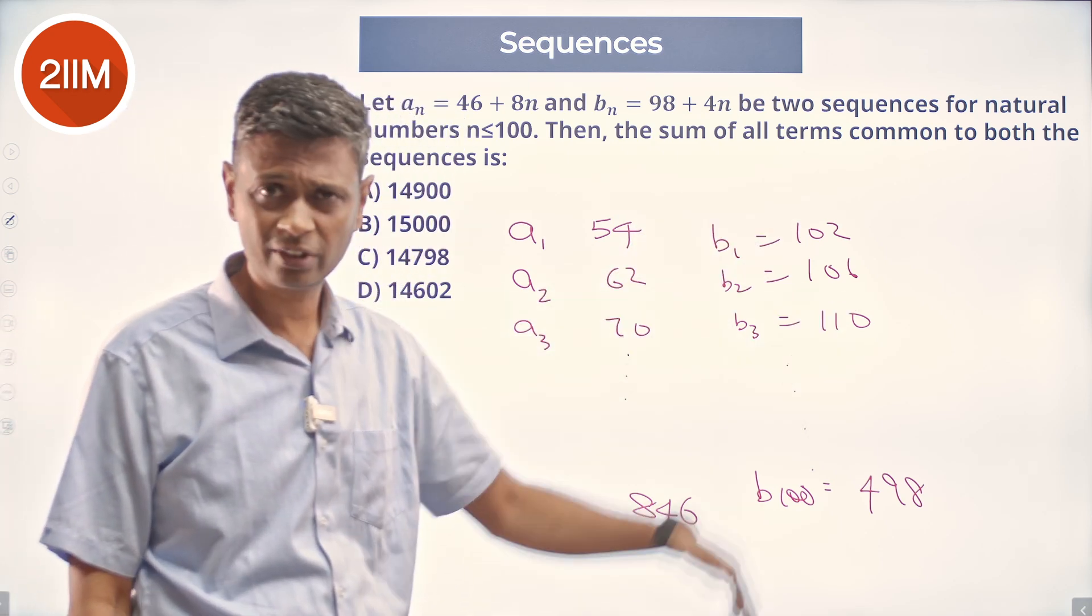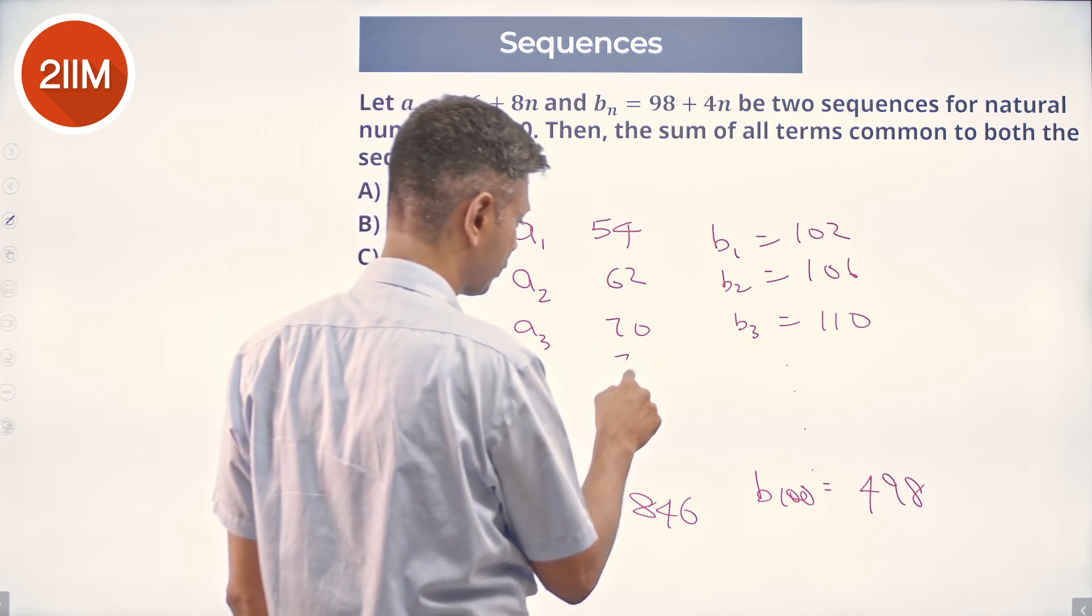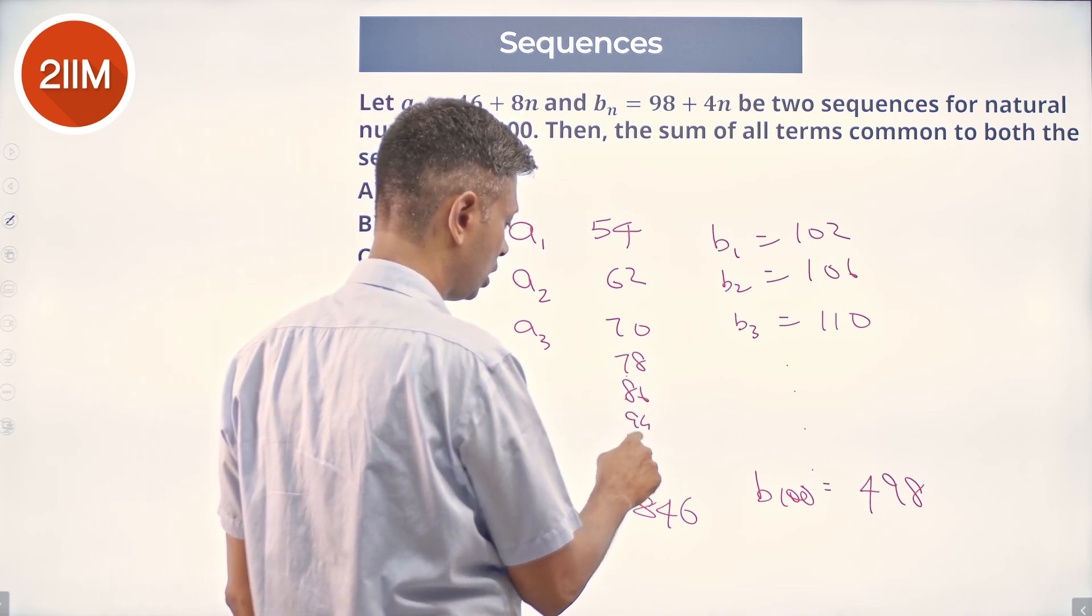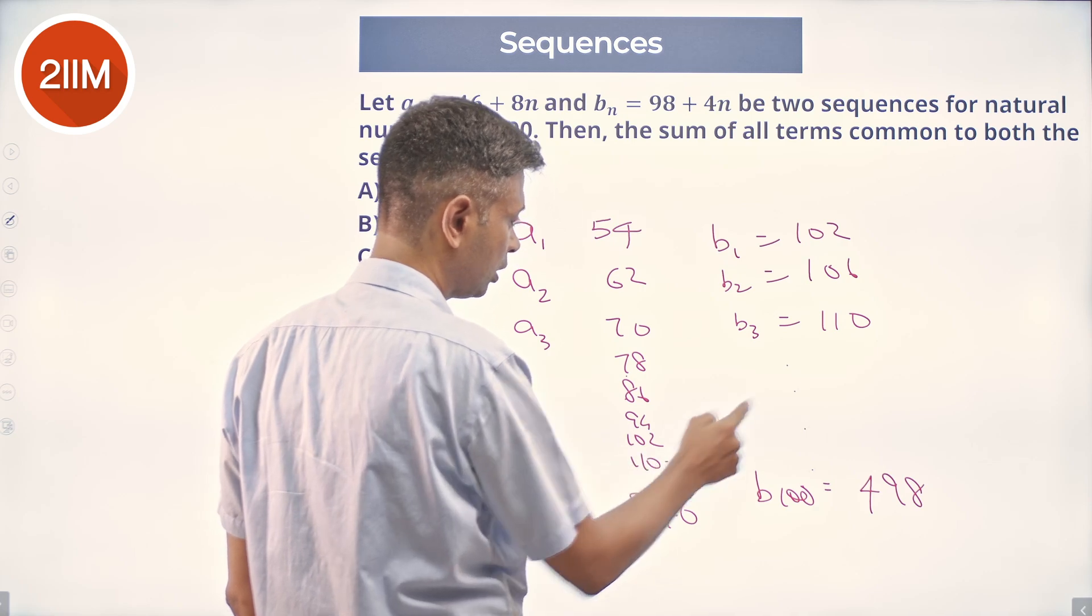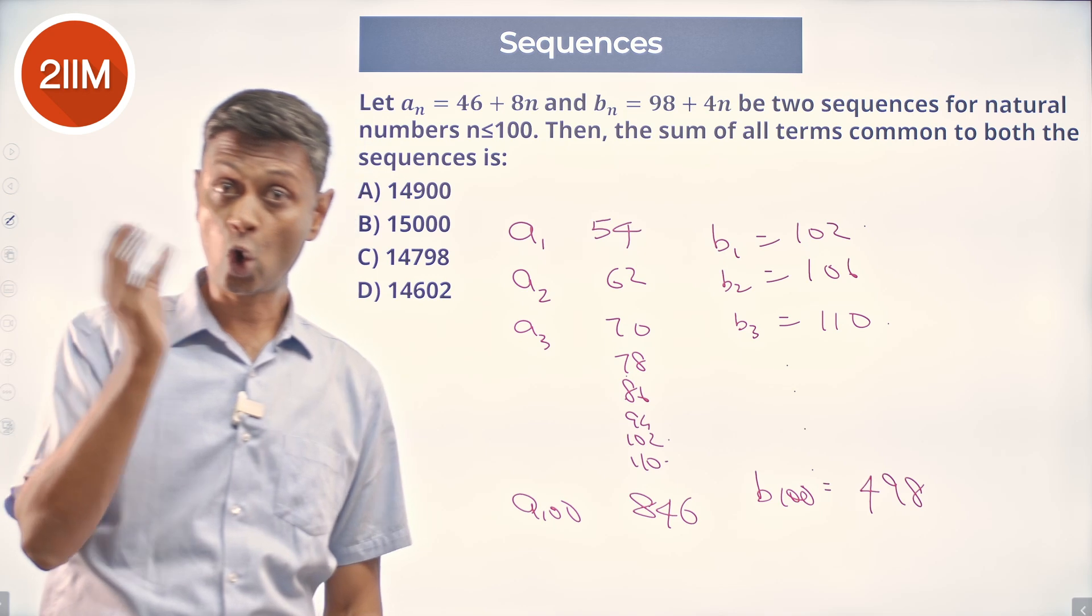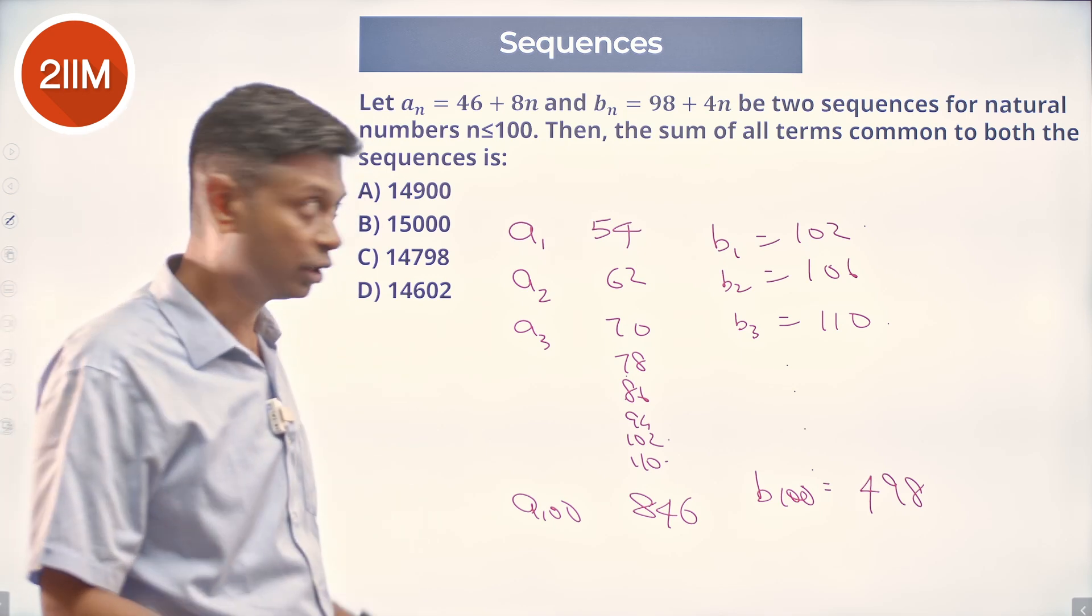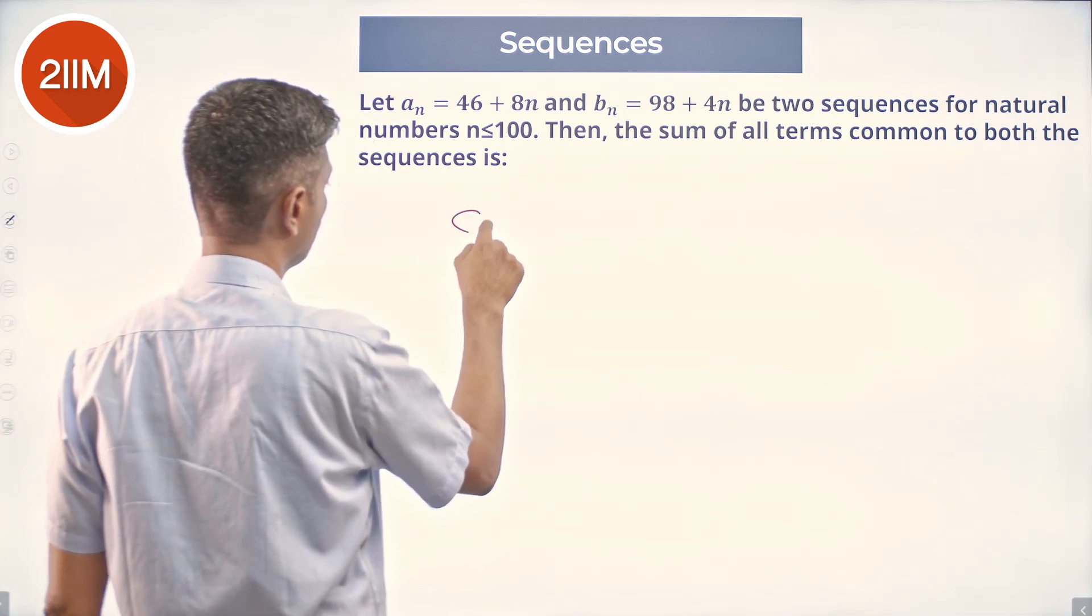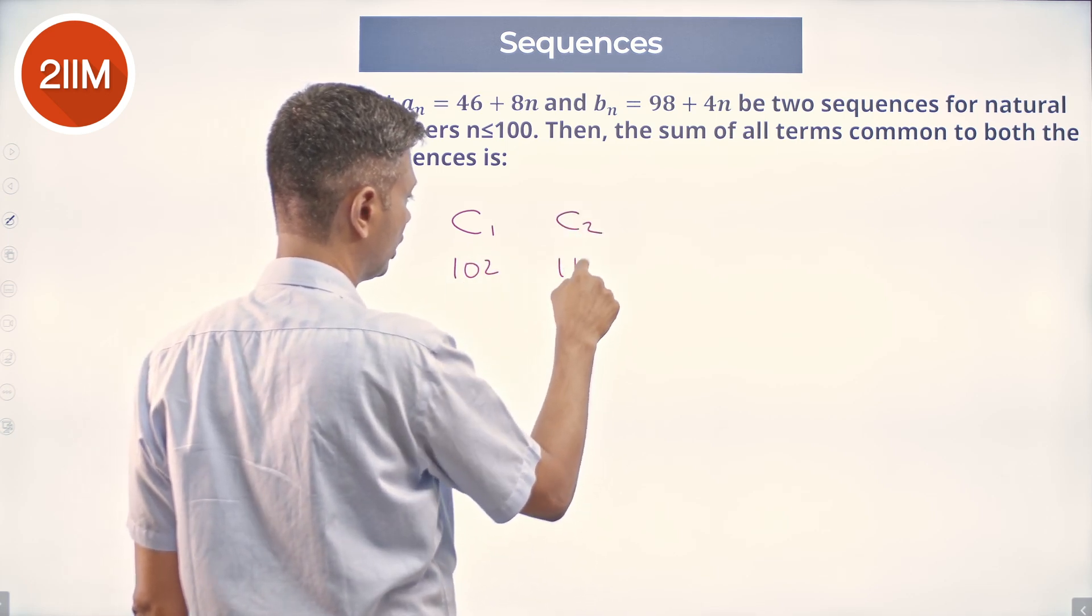How do I find the common term? We have to go all the way till 102, 106, 110. I'm going to brute force it. 70, 78, 86, 94, 102, 110. 110 is there, 102 is there. So my new sequence, the common sequence, we start with 102. I'm going to say C_1 is 102, C_2 is 110.